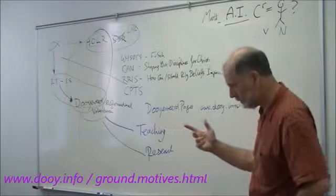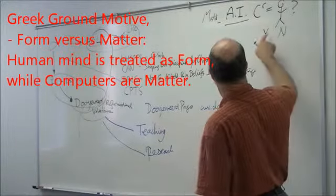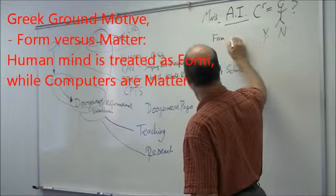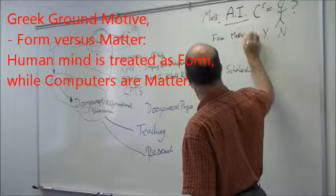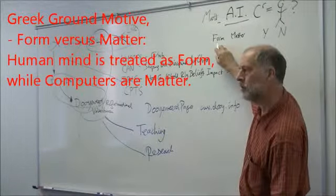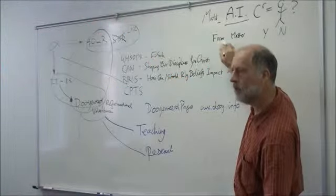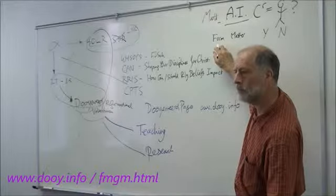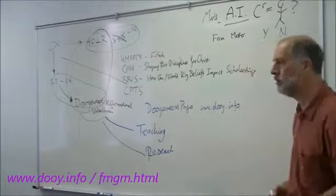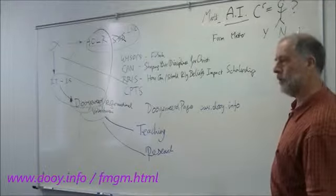There's a Greek ground motive of form and matter. And part of the argument between yes and no is based on form and matter. Computers are matter. The human mind is form, if you like, brain-mind argument. How can brains create minds? How can matter create thinking? And that's the basis on which the argument proceeds.